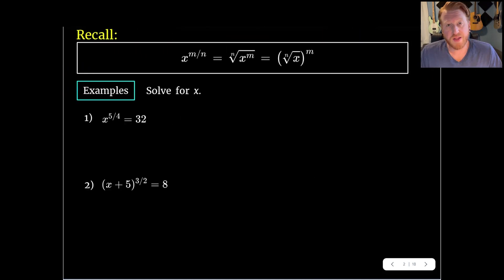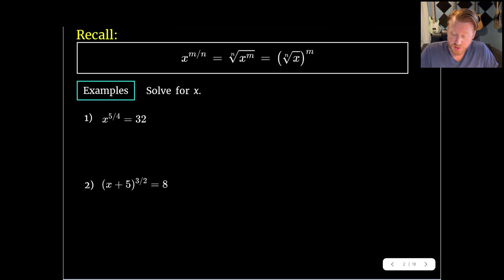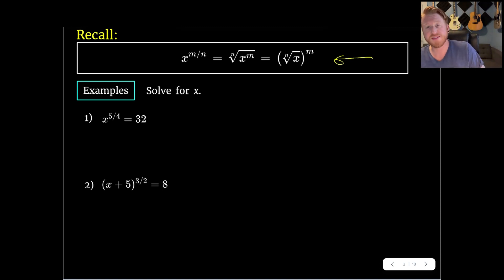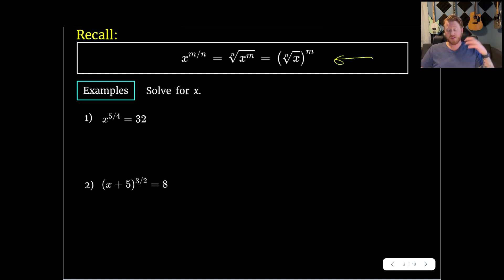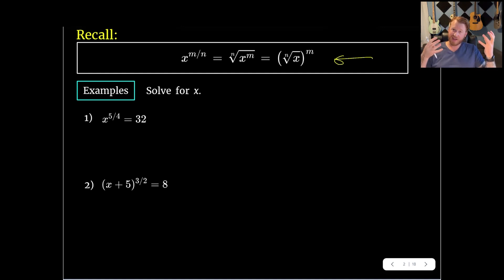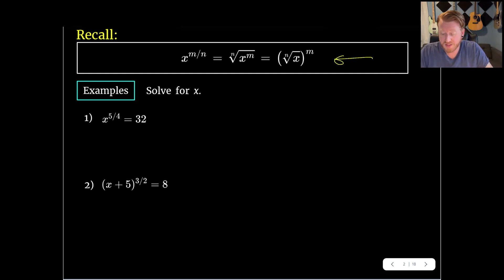We'll start off with the radical and rational exponent portion. Recall that we have this property — I call it the super helpful property because I do find it super helpful. If we have a base raised to a fraction, we can convert that into radical form, and depending on where we want to put that m term in the numerator, we can put it inside the radical on the radicand or outside the radical, just depending on what makes it easier.